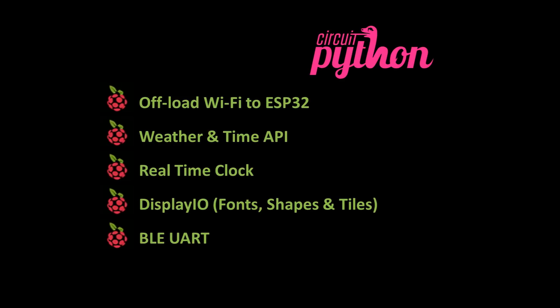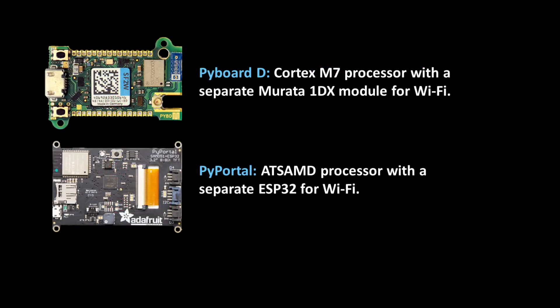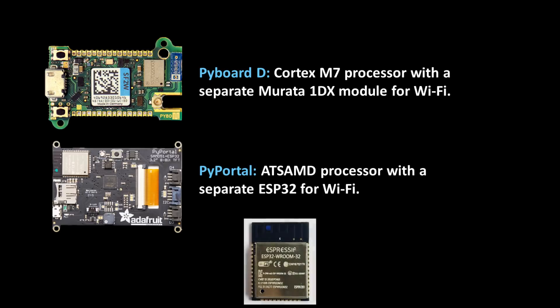One question you might have is why use an ESP32 as a coprocessor? Both the MicroPython PyBoard D and the CircuitPython PyPortal have chosen the coprocessor approach. The PyBoard D runs a Cortex-M7 processor with a separate Murata 1DX module for Wi-Fi. The PyPortal runs an AT-SAMD processor with a separate ESP32 for Wi-Fi. The ESP32 is a powerful board that could run MicroPython by itself, and for many simple projects this is a valid approach. However, the ESP32 can be a bit sluggish due to its underlying RTOS. There are substantial performance gains by decoupling the Wi-Fi operations from the MicroPython VM. Also, CircuitPython won't run on the ESP32 and Adafruit doesn't plan on adding support.